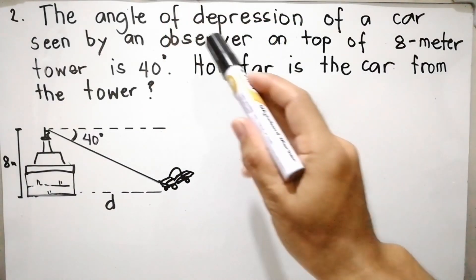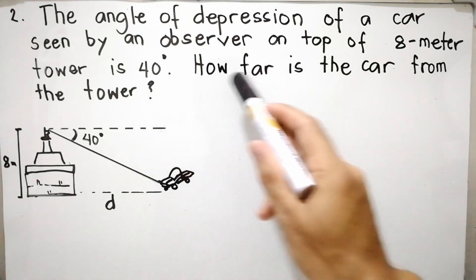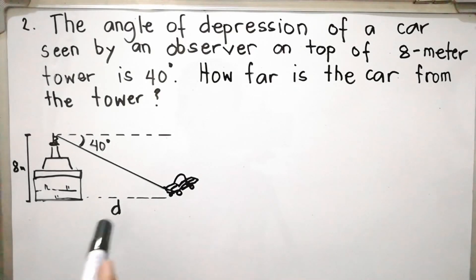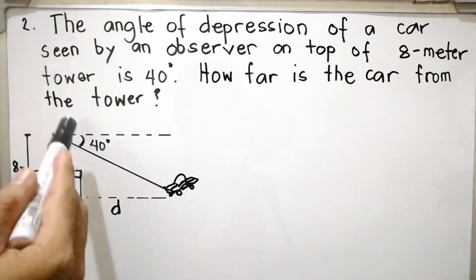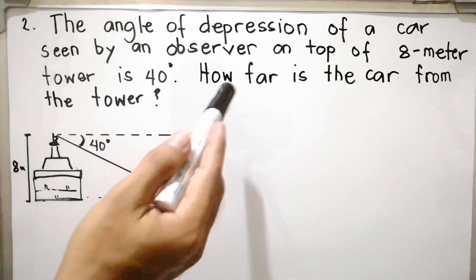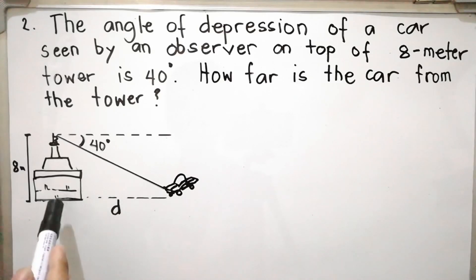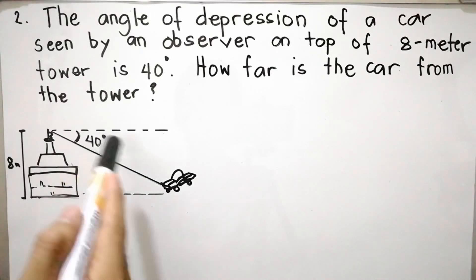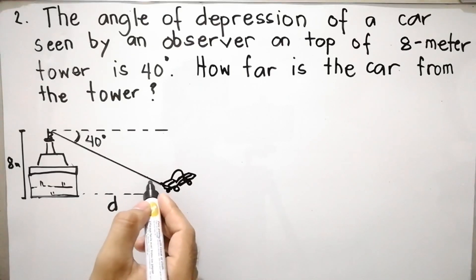For problem number two: the angle of depression of a car seen by an observer on top of an 8-meter tower is 40 degrees. The height of the tower is 8 meters and the angle of depression is 40 degrees. The question is: how far is the car from the tower? We need to find the distance from the tower to the car.